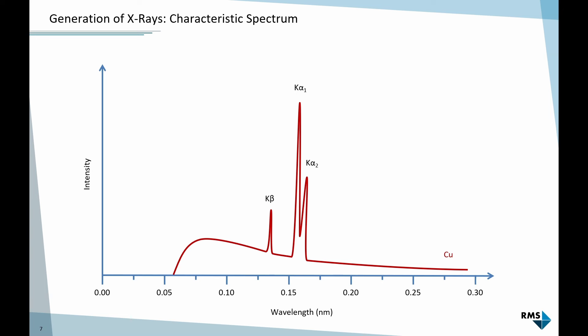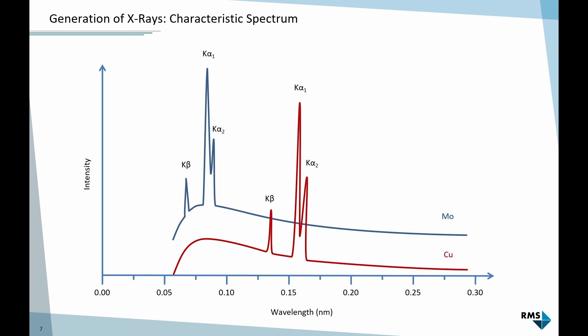The typical spectrum from an X-ray tube contains the continuous Bremsstrahlung background with very well-defined characteristic emission lines on top. Because the wavelength of these lines is specific or characteristic for a certain element, we call this the characteristic radiation. We can see the copper Kα1, Kα2, and Kβ lines, and for another element like molybdenum, the same lines appear at a different wavelength. By choosing the target material, we can decide which wavelength to use for XRD.